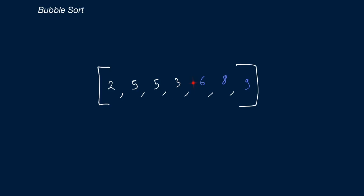Because we performed a swap between 3 and 6, we reiterate through the array. We start at 2: compare 2 to 5 — correct order. Then 5 and 5 — correct order. Then 5 and 3 — not in order, so we swap them. We've reached the end, so 5 is now in its final position. We did perform a swap, so we have to reiterate through the first three numbers.